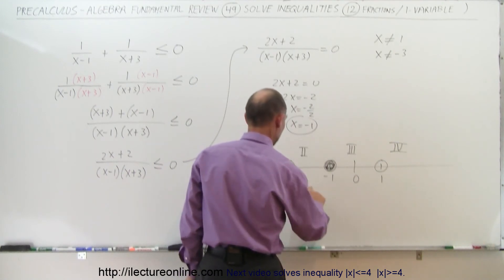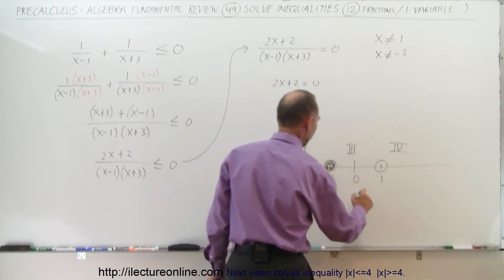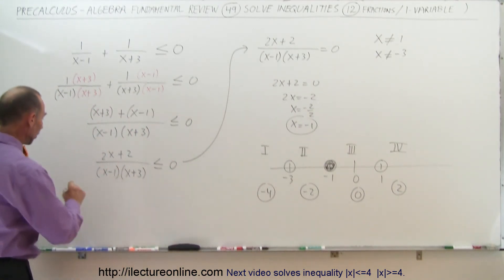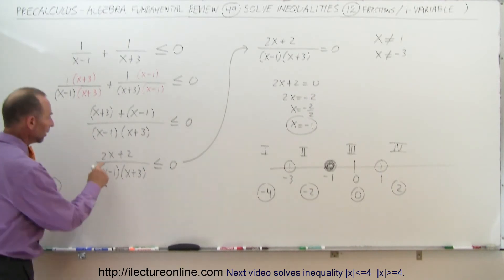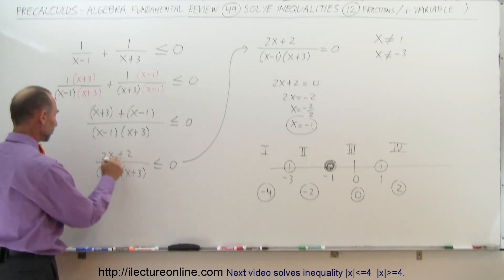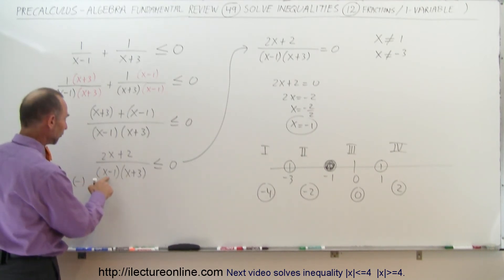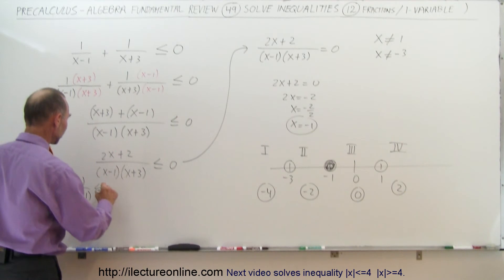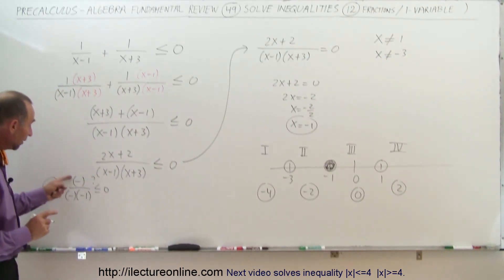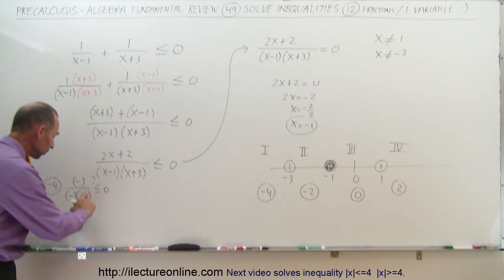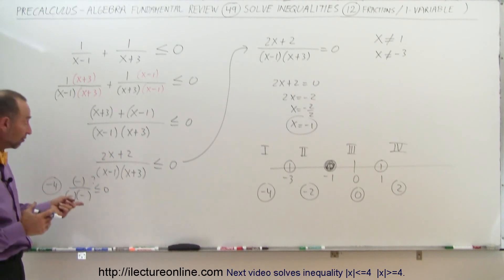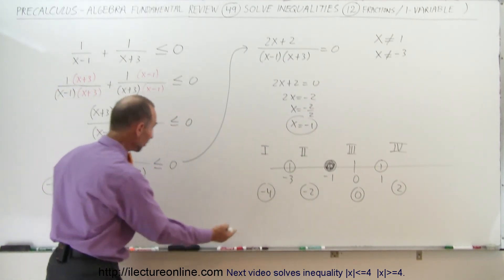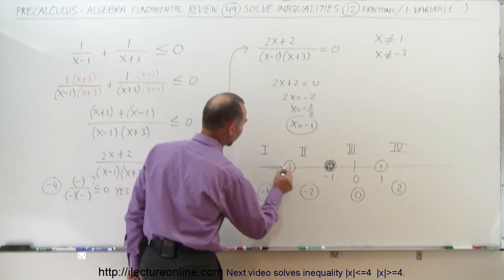We pick four test points, one in each region. Starting with negative 4 from region 1: the numerator gives 2 times negative 4 is negative 8, plus 2 is negative 6 — a negative quantity. Plugging negative 4 into (x minus 1) gives negative, and into (x plus 3) also gives negative. That's three negatives: a negative divided by a negative divided by a negative is a negative number, and that is less than 0. The answer is yes — all numbers less than negative 3 are part of the solution.